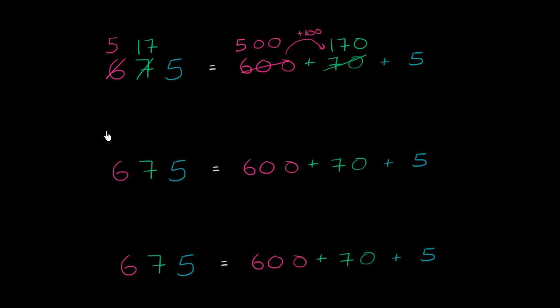Now, we could keep doing that. We could regroup some of this value in the tens place to the ones place. So for example, we could give 10 from the tens place and give it to the ones place. Let's do that. So let's take 10 away from here. So that becomes 160. This becomes 16. And let's give that 10 to the ones place. Well, what does the ones place now become? Well, 10 plus 5 is 15. So this 5 is now a 15.